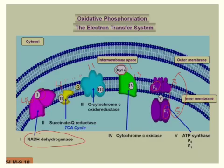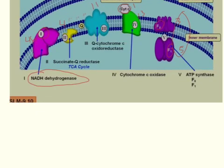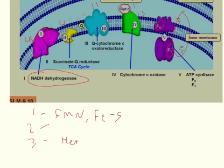Each of these complexes use several prosthetic groups in transferring electrons. For example, Complex 1 uses FMN, which is flavin mononucleotide, and it also uses an iron-sulfur prosthetic group. Complex 2 uses essentially the same prosthetic group as Complex 1. Complex 3, however, uses heme instead of flavin mononucleotide, but it also uses iron-sulfur prosthetic group.